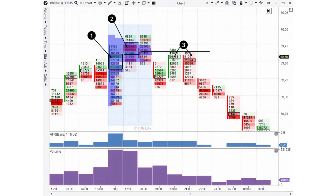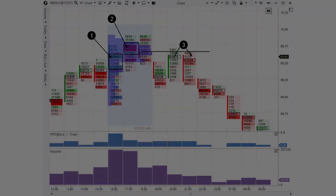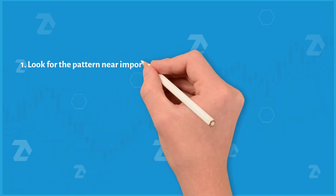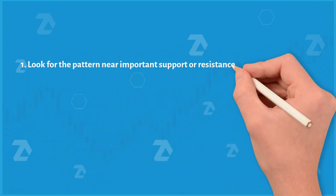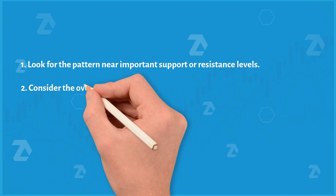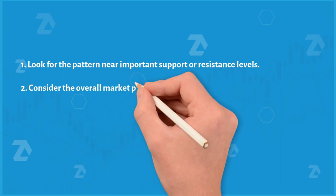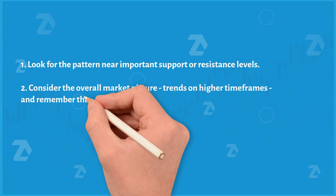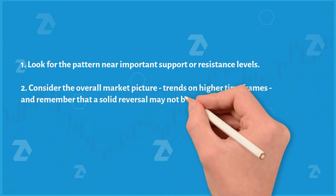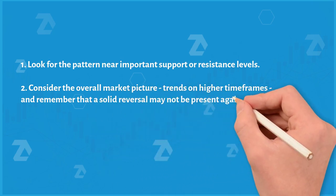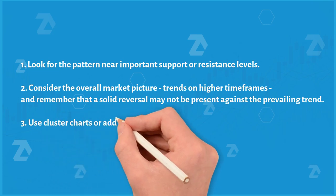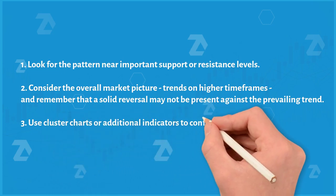In summary, here are a few tips to enhance the effectiveness of this pattern: one, look for the pattern near important support or resistance levels; two, consider the overall market picture — trends on higher time frames — and remember that a solid reversal may not be present against the prevailing trend; three, use cluster charts or additional indicators to confirm your decisions.